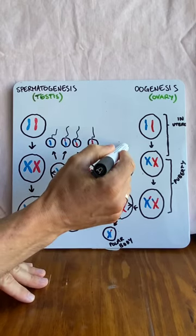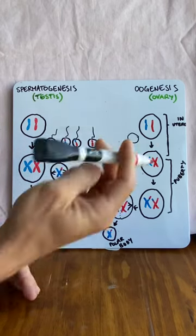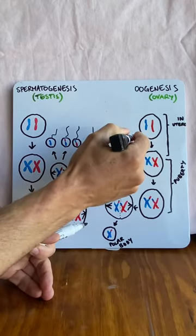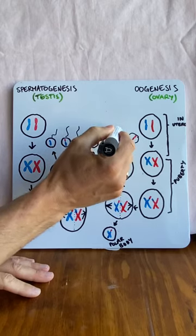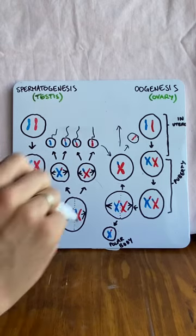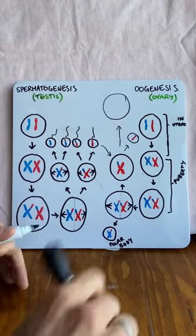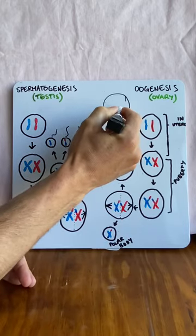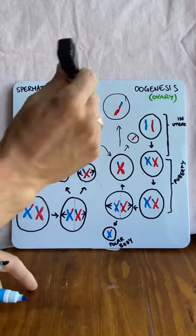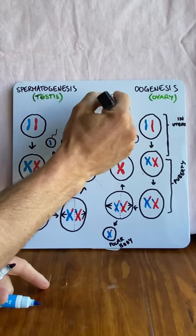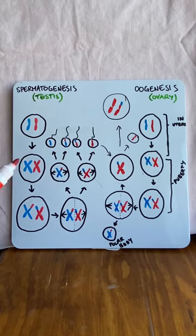It will split apart and form another cell that is very similar to a polar body with half the genetic material, and another one that will contain the DNA from the mother and the DNA from the father. This is what gets implanted into the endometrium and hopefully develops into an embryo. Thank you.